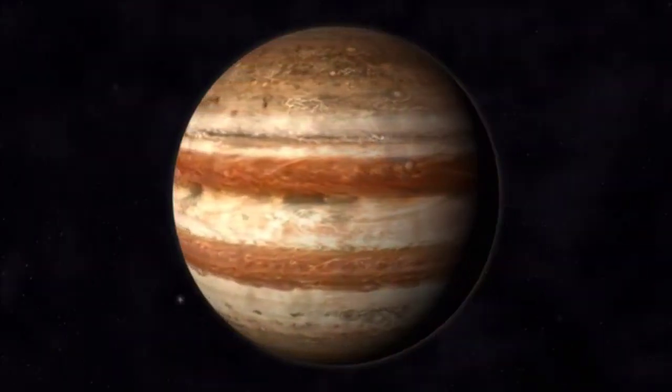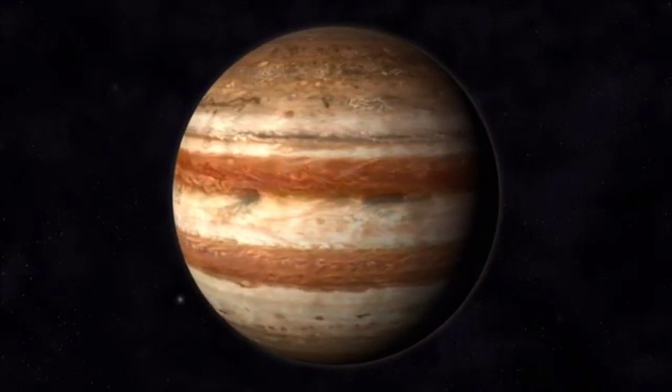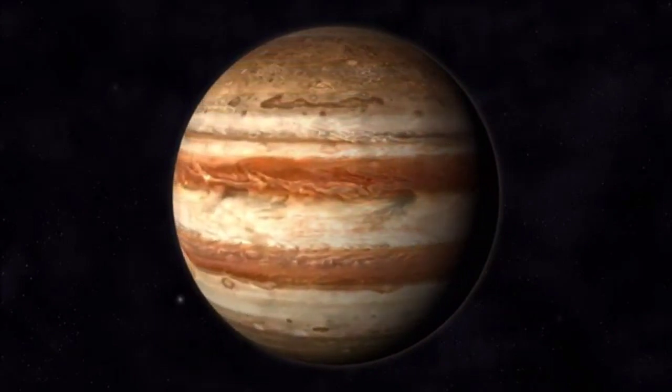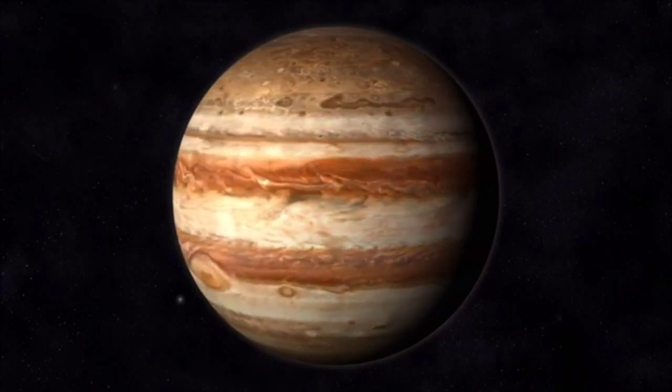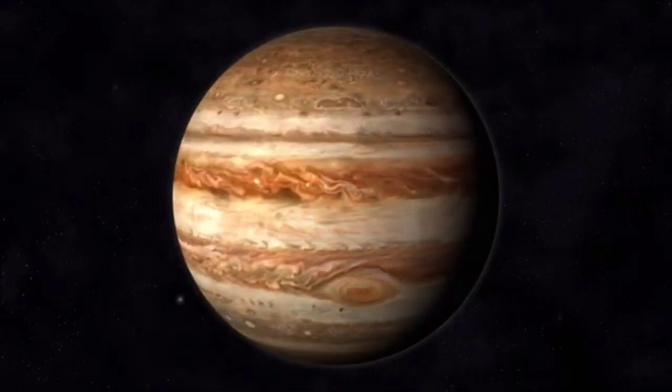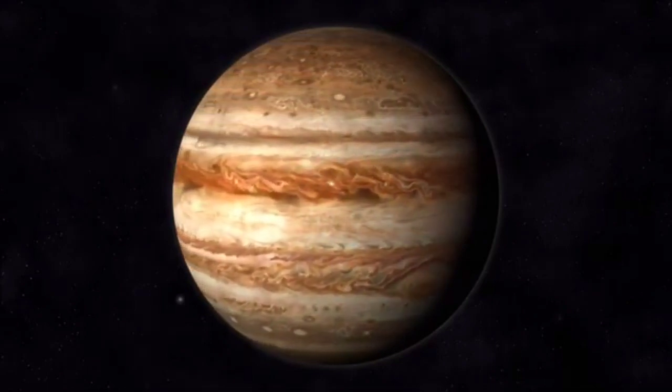The fifth planet from the sun is Jupiter. Jupiter is so big you could fit all of the planets in our solar system inside of it. There is a red spot on Jupiter that is actually a huge storm, three times the size of Earth.